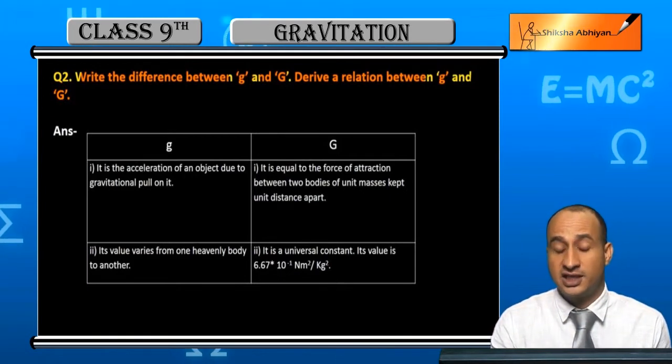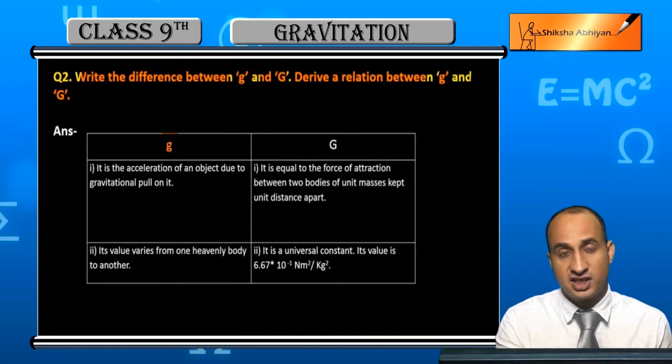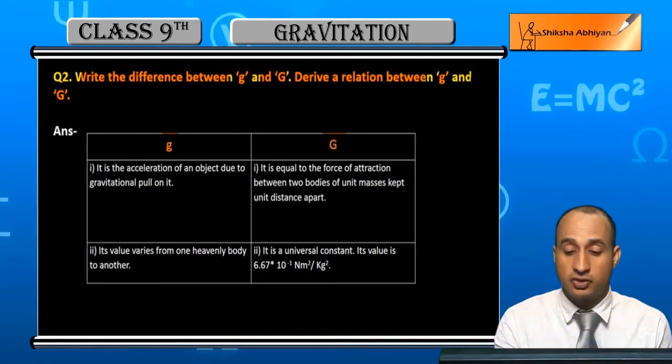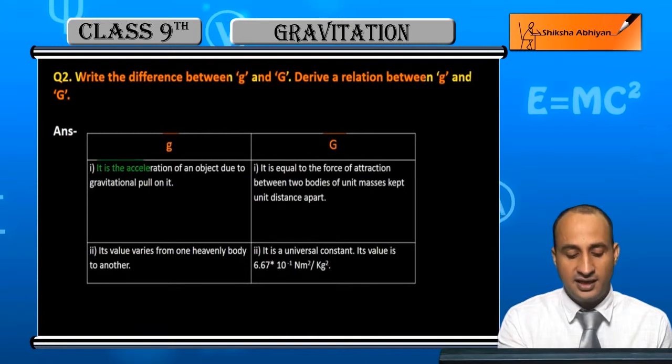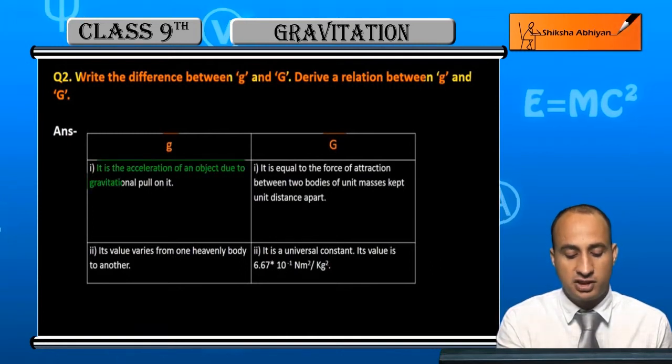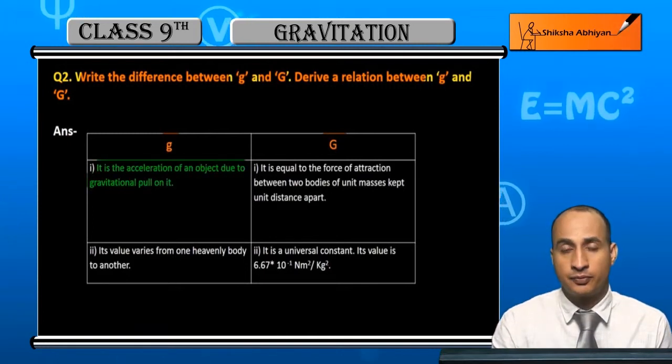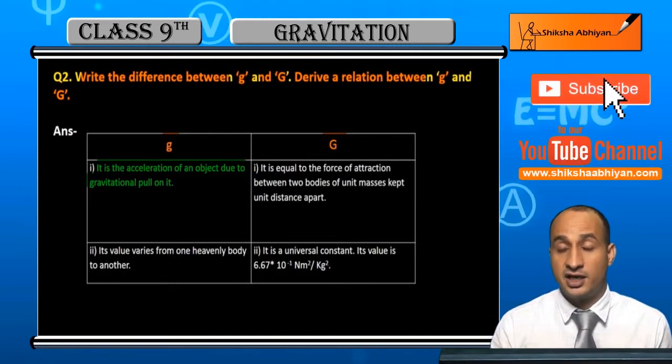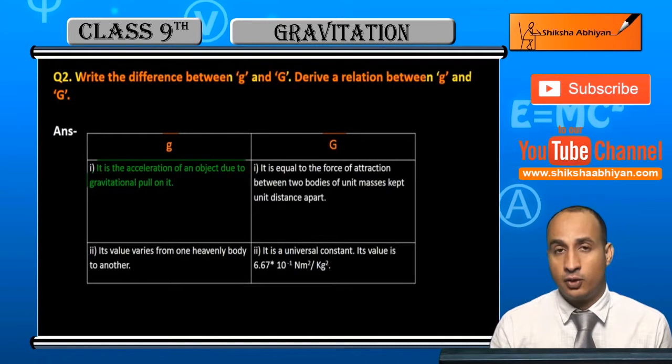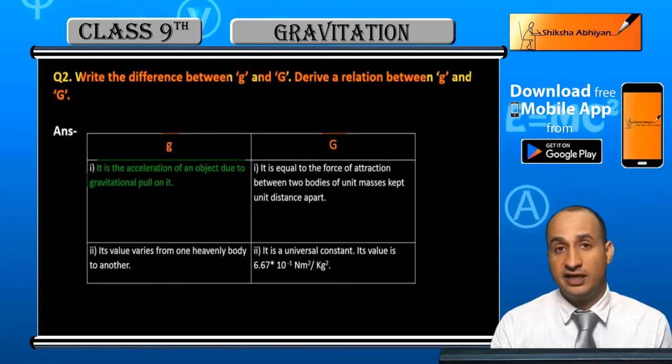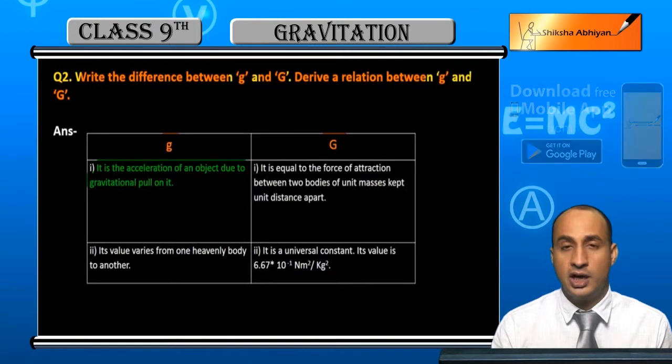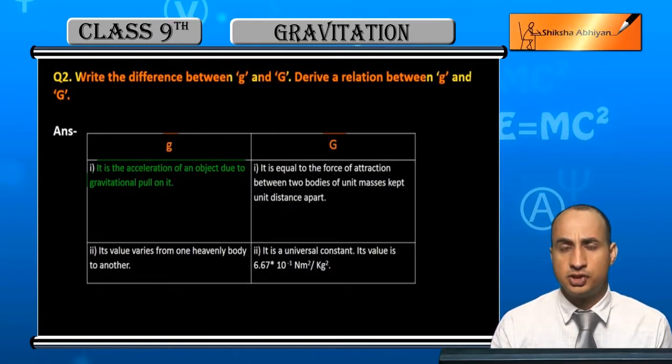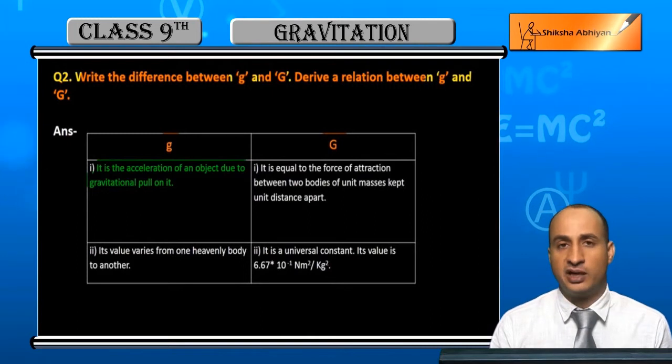Small g is acceleration due to gravity. It is the acceleration of an object due to the gravitational pull on it. So any object experiences acceleration from gravitational pull provided by any heavenly body - if you're on the moon then moon, if on earth then earth, if on sun then sun, or any other planet like Jupiter or Mars.